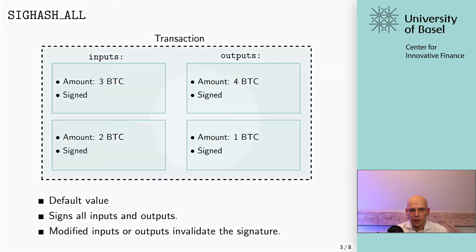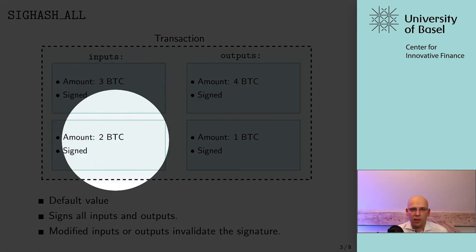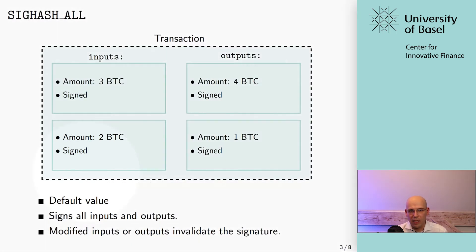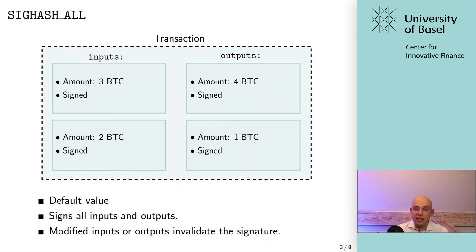With SIG hash ALL — the default — you sign all of the inputs and all of the outputs. Any modifications to the inputs or the outputs will invalidate the signature. So here you have two inputs and two outputs. Whenever something gets changed in this transaction — for example, when anyone tries to change one of the outputs — this will invalidate the signature, since everything in this transaction has actually been signed. You cannot change anything.